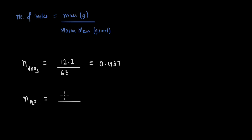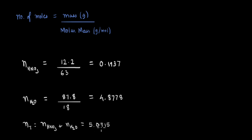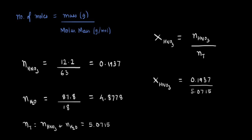Similarly, for water, the mass is 87.8 grams and the molar mass is 18 grams per mole, so the number of moles of water comes out to be 4.8778. The total number of moles is 5.0715. The mole fraction of HNO3 equals the moles of HNO3 divided by the total moles: 0.1937 divided by 5.0715, which gives a mole fraction of 0.038.